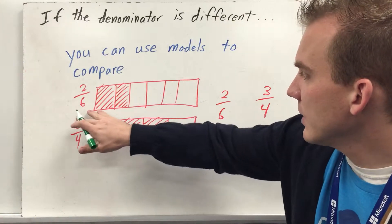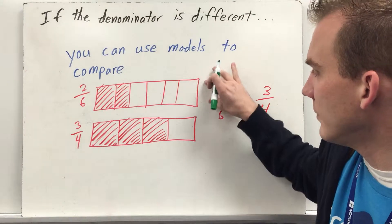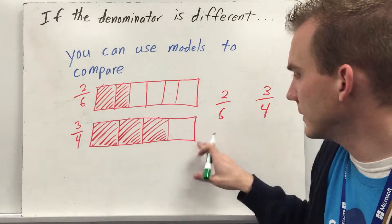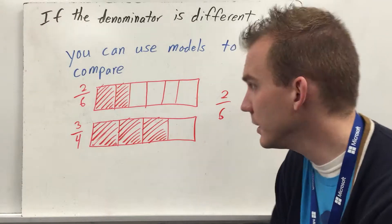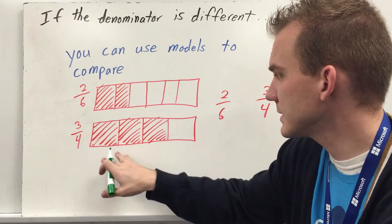Say we have two-sixths and three-fourths. We're going to compare them. If you have a model, make sure your whole is exactly the same. So we're pretty much the same whole here. I've split this up into close-sixths and close-fourths.